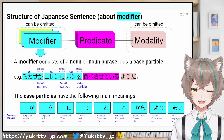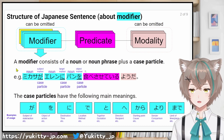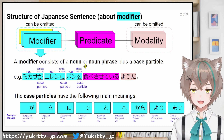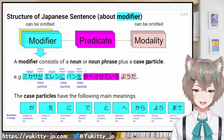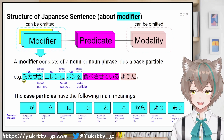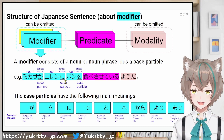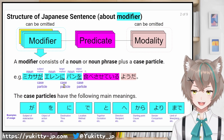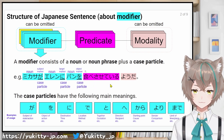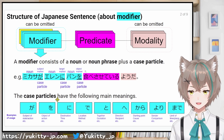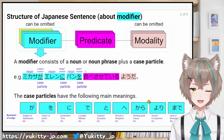From this slide, I'll explain about modifiers. A modifier consists of a noun or noun phrase plus a case particle. For instance: Mikasaが — が is a case particle, working as a subject marker. エレンに — に is a case particle. パンを — を is a case particle. The case particles have the following main meanings.